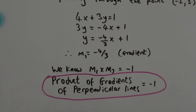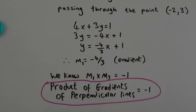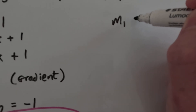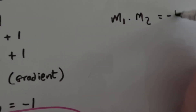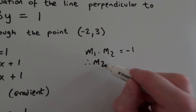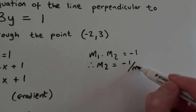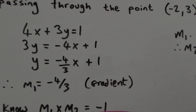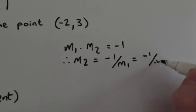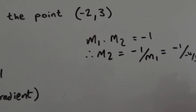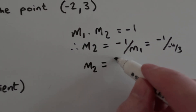We're going to use that to finish off the question. So m1 times m2 equals minus 1, therefore m2 equals minus 1 over m1, which equals minus 1 over minus four-thirds. The minuses cancel, and then it's the same as 1 over four-thirds, so m2 equals three-quarters.